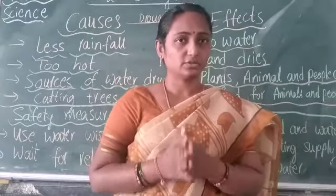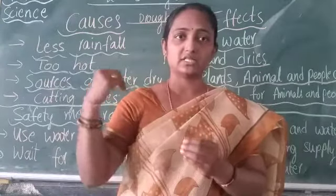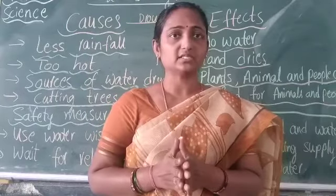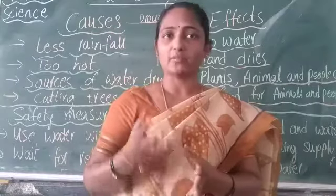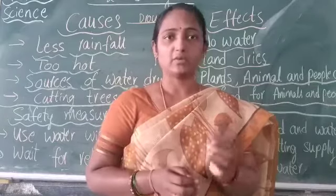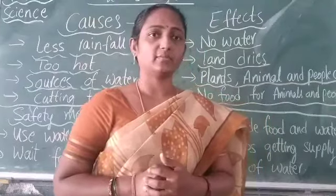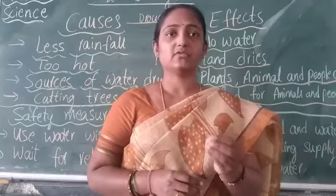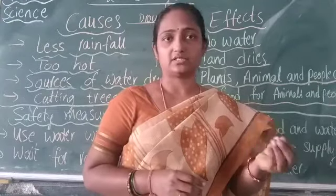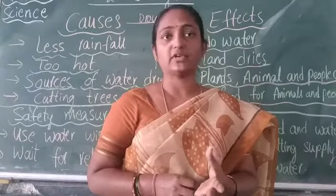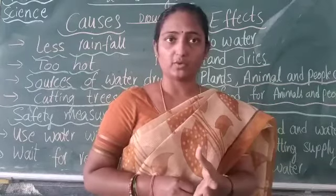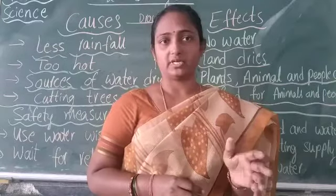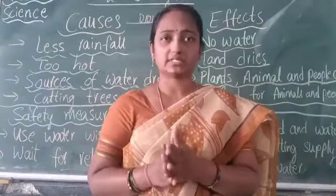In both conditions, cutting of trees imbalances nature and causes these natural disasters. Stop cutting trees — if you plant more trees, it will balance nature and we will not face these disasters in future. Also, even if you are not in a drought condition, use water properly, turn off taps when not in use, and save water for future users.